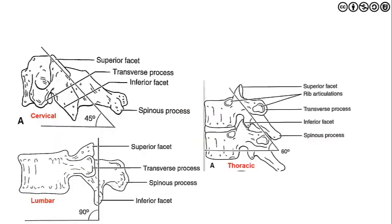As we move from one region to the next, the angulation of these processes changes. In the cervical spine the superior and inferior facets lie at about a 45-degree angle. Moving into the thoracic spine it changes to a 60-degree angle — where the rule of threes commonly referenced in the thoracic spine comes in — and by the lumbar spine the facets are perpendicular to the vertebral body, at a 90-degree angle.